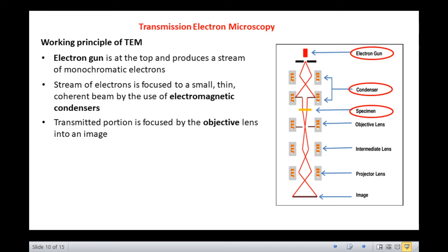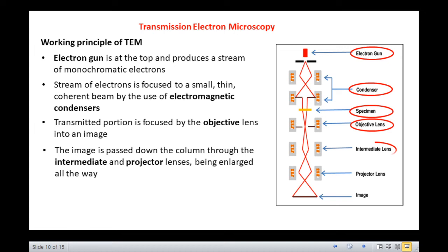This transmitted portion is focused by the objective lens into an image. This image is 2,000 times magnified. The image is then passed down the column through the intermediate and projector lenses, being enlarged all the way. The image strikes the phosphor image screen and light is generated, allowing the user to see the image. The final image is 250,000 times magnified.